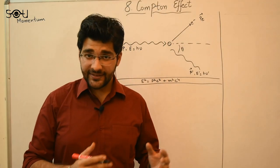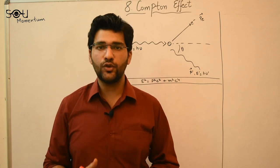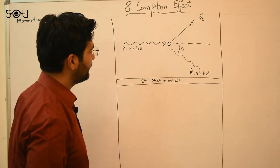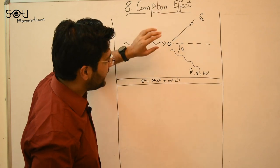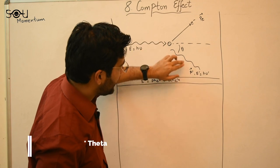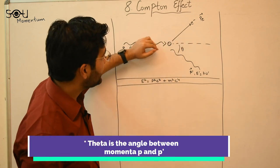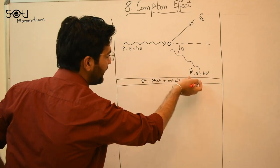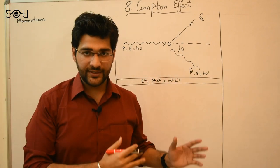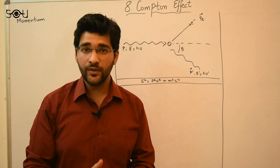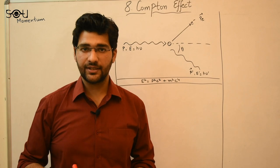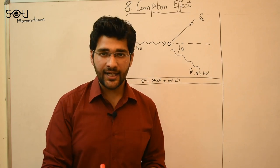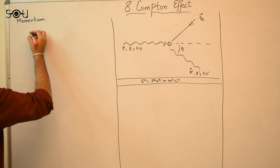Compton explained this entire phenomenon by treating it as a collision between two particles. Suppose we have an x-ray photon traveling toward a stationary electron. After scattering, the photon travels at angle θ with respect to its original direction and the electron travels in another direction. To solve this mathematically, we apply two conservation laws: conservation of linear momentum and conservation of energy before and after the collision.